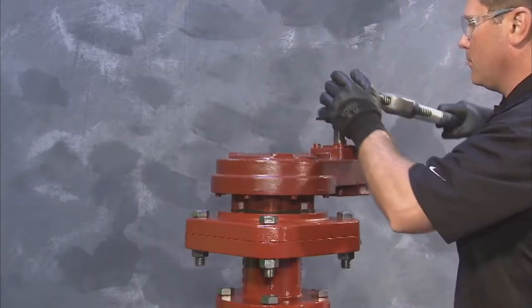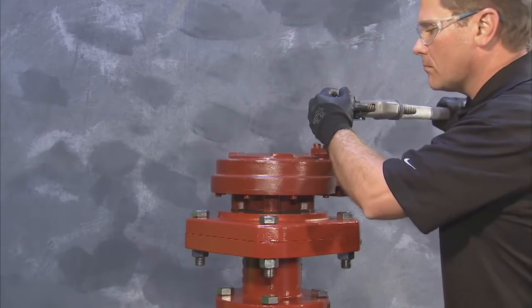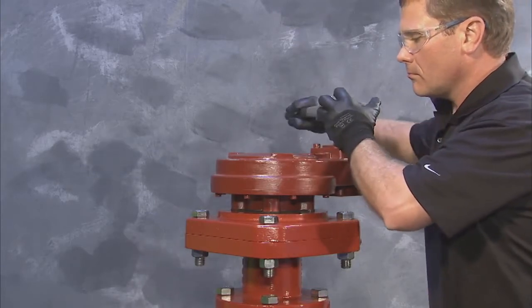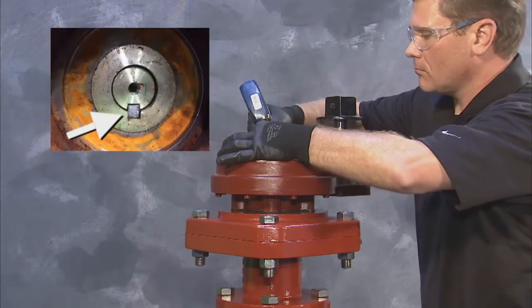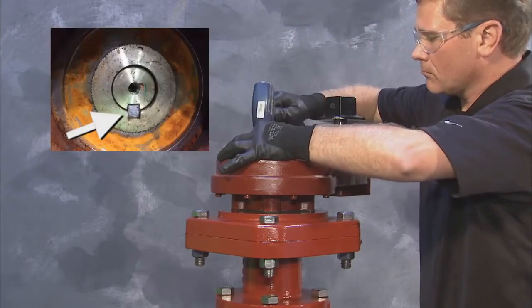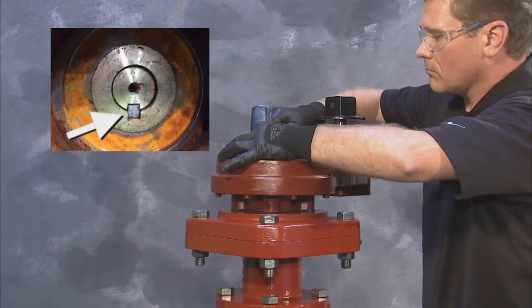With the gear housing secured, rotate the gearing op nut to align the keyway. Insert the key and lightly tap it with a rubber mallet until it is flush with the top of the valve stem.